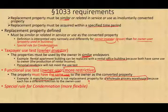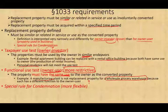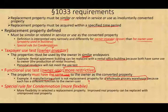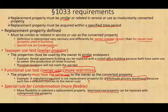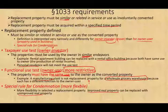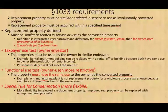There are special rules for condemnation — when the government forces you to give up your property. These rules are more flexible. For example, if you have improved real property, it can be replaced with unimproved real property. Greater flexibility is allowed because you had no control over the government taking your property.